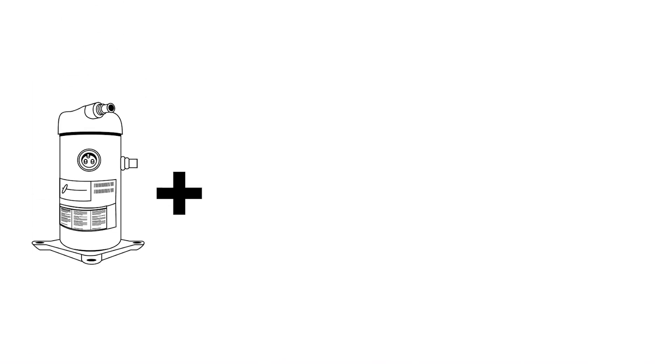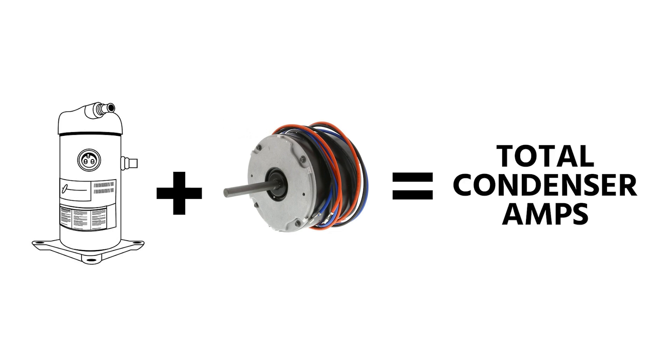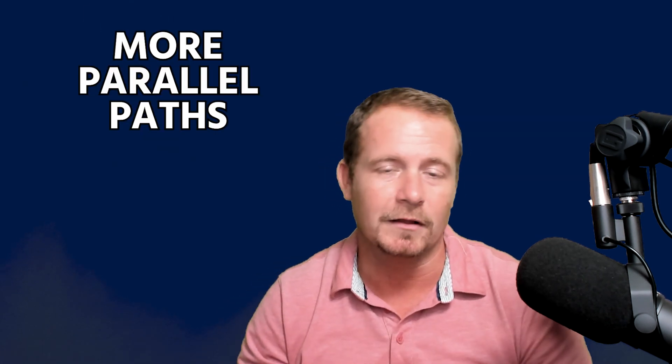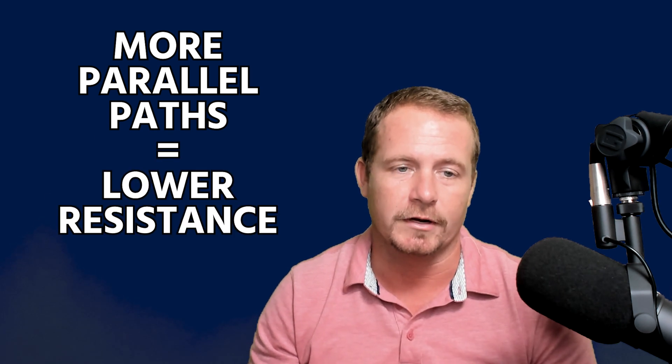Adding additional parallel loads increases the amperage in a circuit. We see this every day when compressor amps and condenser fan amps added together equals total condenser amps — meaning those two loads together actually have lower resistance than either of them individually. That can sound counterintuitive, but the more current you have, the lower the circuit resistance. Electricity takes all of the parallel paths, and the more parallel paths you have, the lower the total circuit resistance.